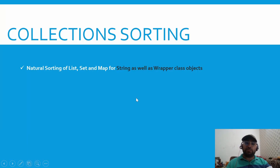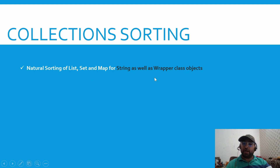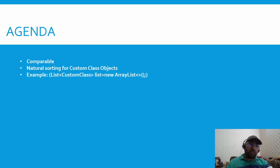Hello everyone, welcome back to my channel Prince Automation Destination. In our last lecture of the collections sorting series, we covered how we can achieve natural sorting for list, set, and map collections for String and wrapper class objects. In case you are not familiar with natural sorting, please take a look at my previous video, which I'll be sharing in the icon, as it will serve as a basis for the current video.